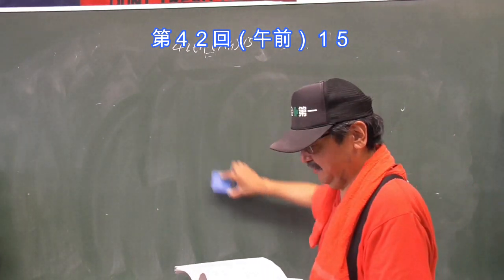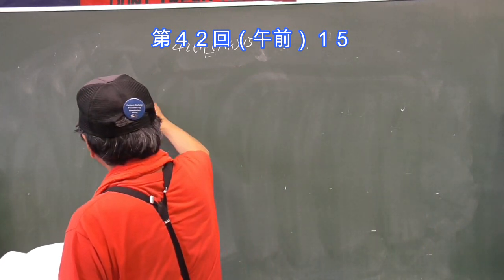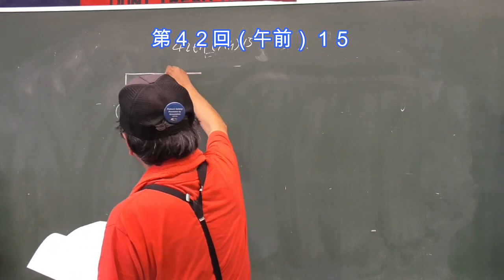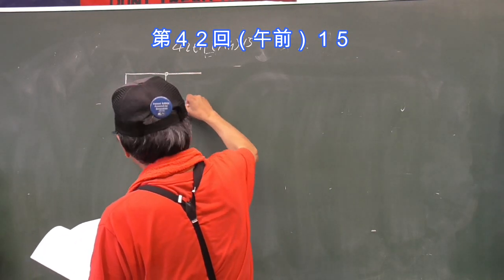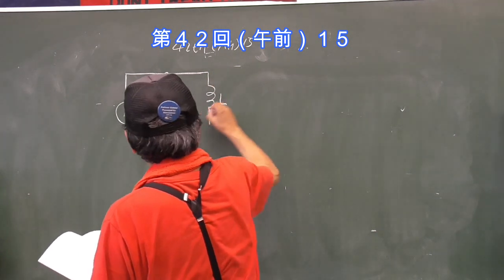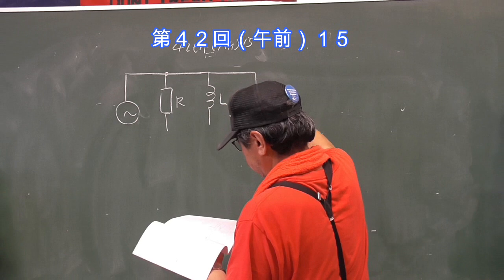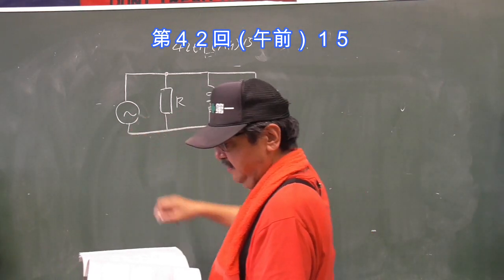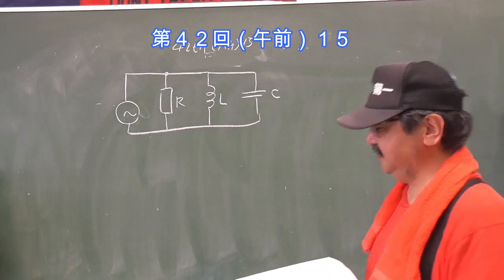キルヒホッフの法則使っても解けるんですけれど、多分ミルマン使った方が早いかなと思います。次、問題の15番を見てみましょう。これも回路そのものには著作権ございませんのでここに書きます。抵抗と、コイルと、コンデンサーの並列回路。これもですね、一般的な問題です。